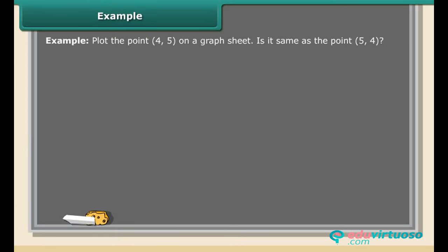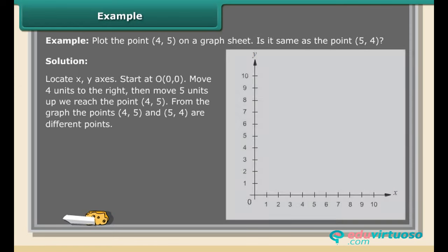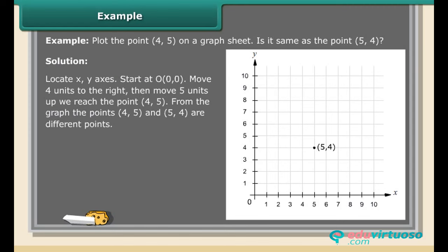Example: Plot the point (4, 5) on a graph sheet. Is it same as the point (5, 4)? Solution: Locate X, Y axes. Start at O (0, 0). Move 4 units to the right, then move 5 units up, we reach the point (4, 5). From the graph, the points (4, 5) and (5, 4) are different points.